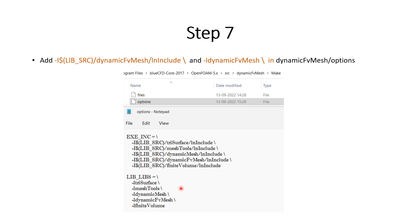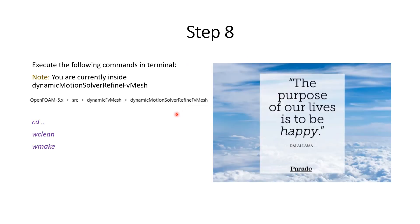Next, we also add a line near the end of the options file at SRC/dynamicFvMesh/Make/options. This is the final configuration step. Now we will compile: first we clean the library using wclean, then compile it using wmake. Since we are currently inside dynamicMotionSolverRefineFvMesh, we go back one level using 'cd ..' before running wclean and wmake, as the make files are in dynamicFvMesh.